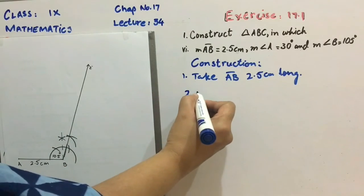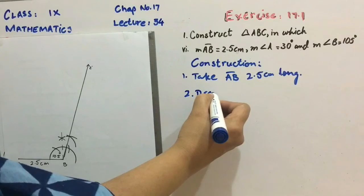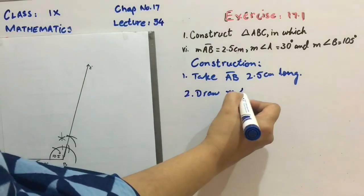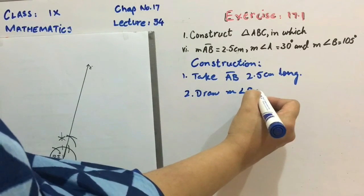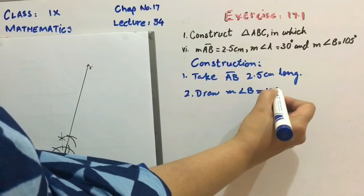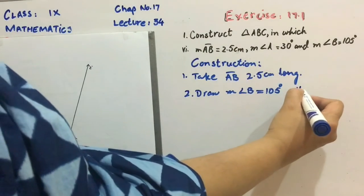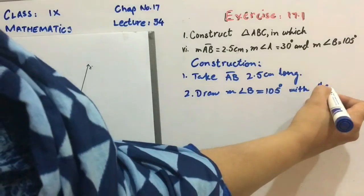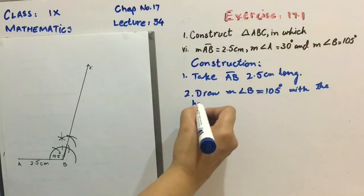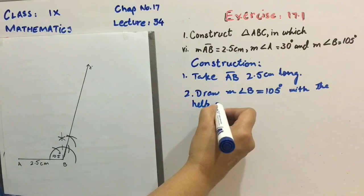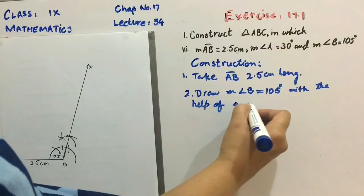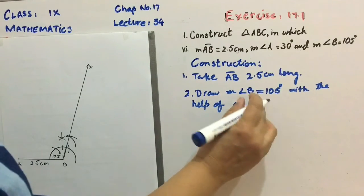Now note down the step number 2. Draw measurement angle B which is equal to 105 degree, angle of 105 degree with the help of a pair of compass.